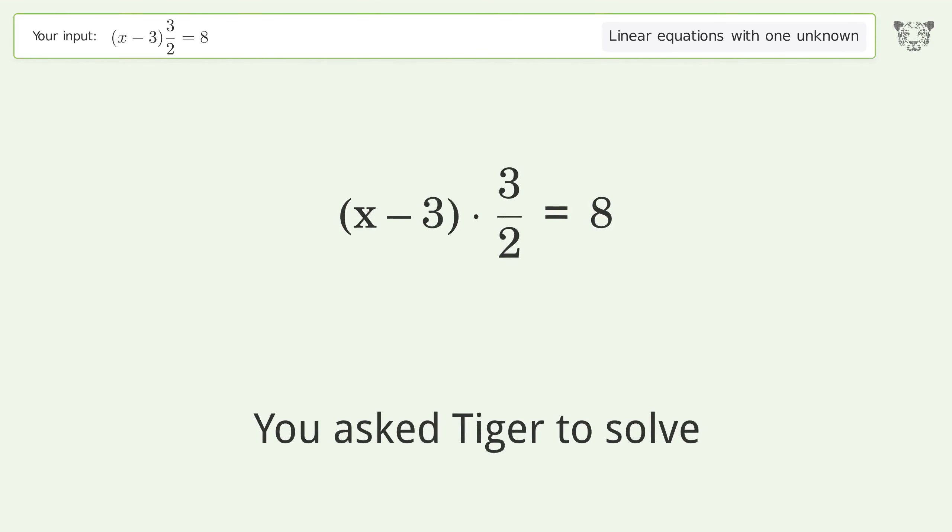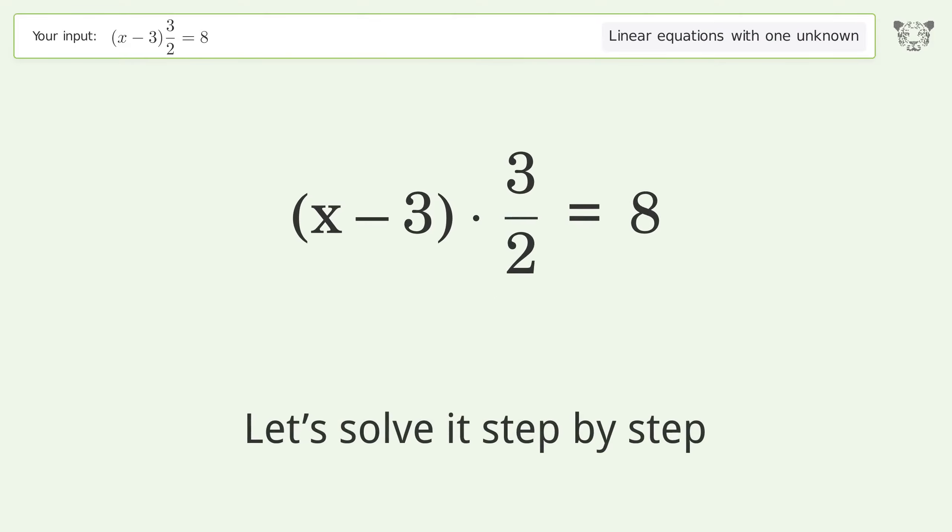You asked Tiger to solve this. This deals with linear equations with one unknown. The final result is x equals 25 over 3. Let's solve it step by step. Simplify the expression, multiply the fractions.